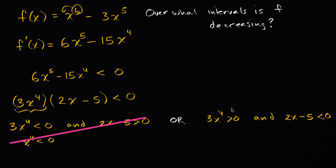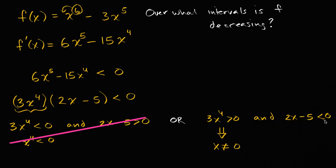So we only worry about the second case. Three x to the fourth being greater than zero is true as long as x is not equal to zero — because for any other x, taking it to the fourth power and multiplying by three gives a positive result. And two x minus five less than zero means two x is less than five, so x is less than five halves.